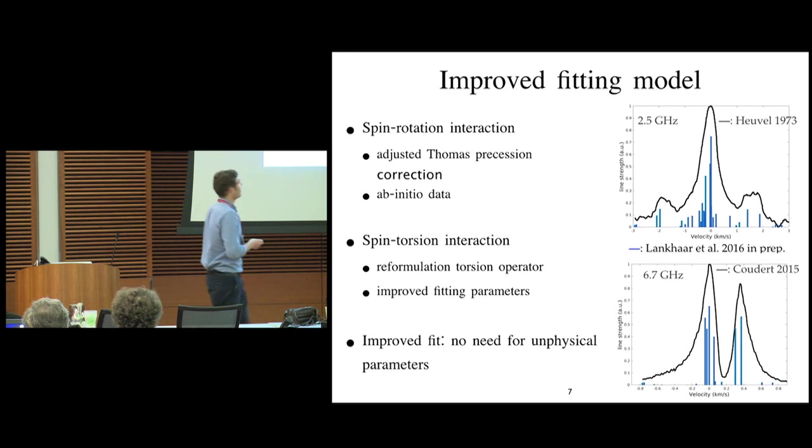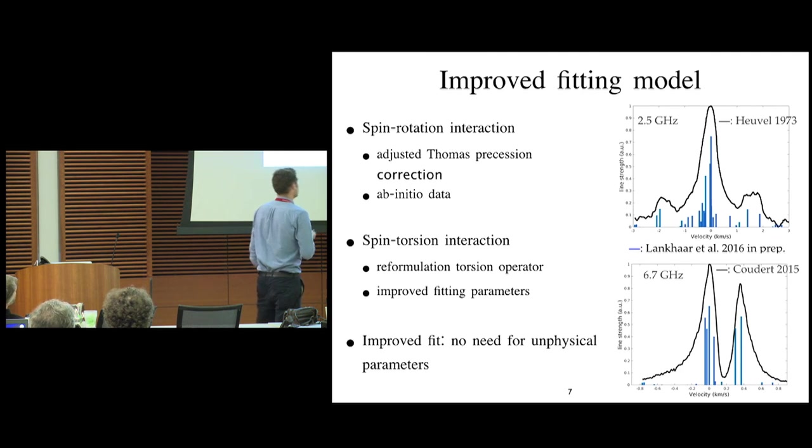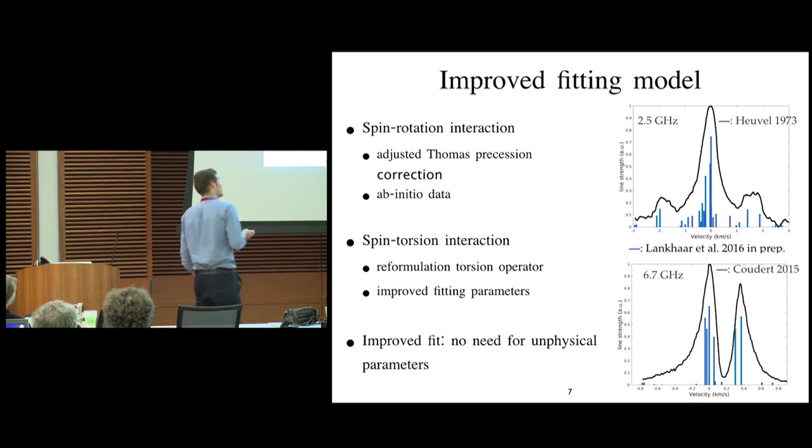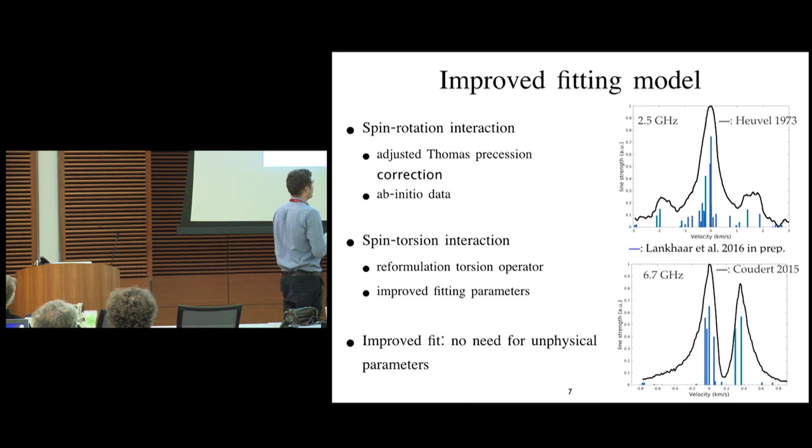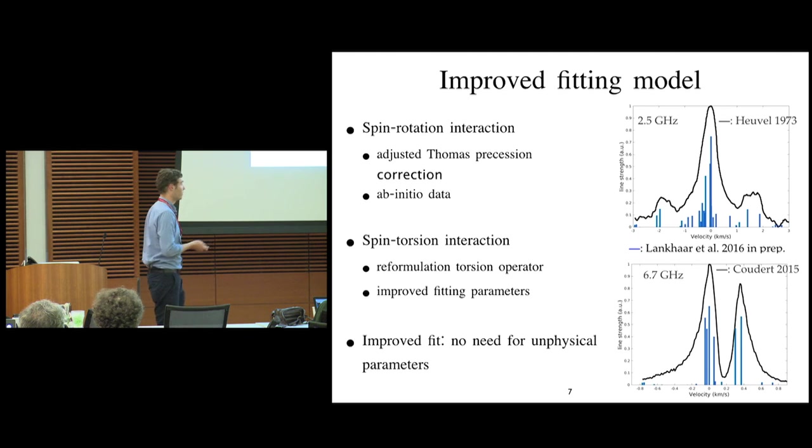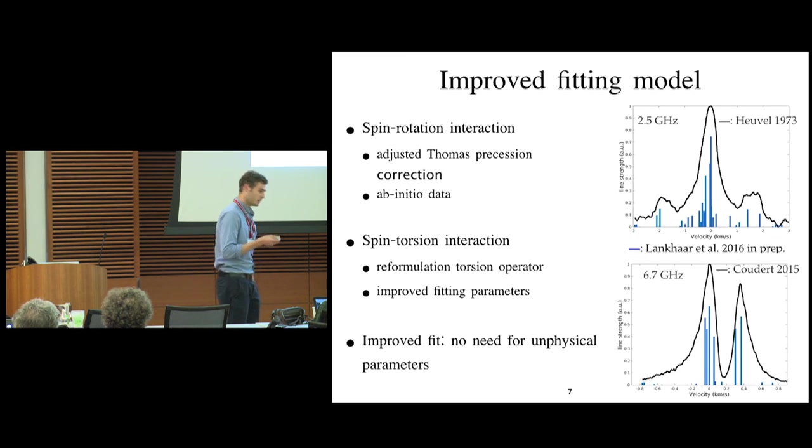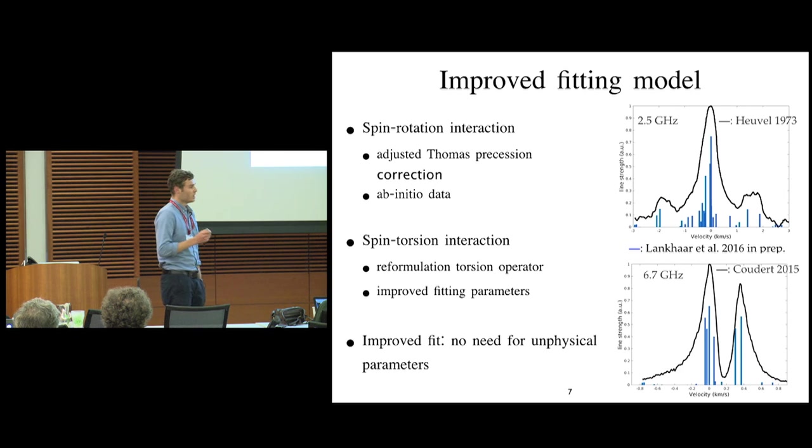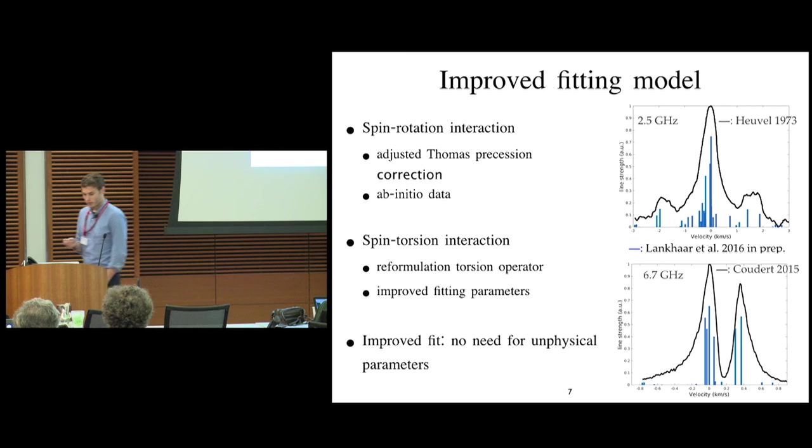So on the right side, you can see two spectra that are being found in maser transitions. The black lines are experimental spectra, and the blue lines, those are calculated transitions with intensity proportional to how tall the bars are. And you can see that we find a very good agreement with the experiment, and that is using no unphysical parameters. We did fit the spin torsion parameter, because that is not calculable with ab initio data. So this hyperfine structure we've calculated is a very good starting point to look further to the Zeeman effect.